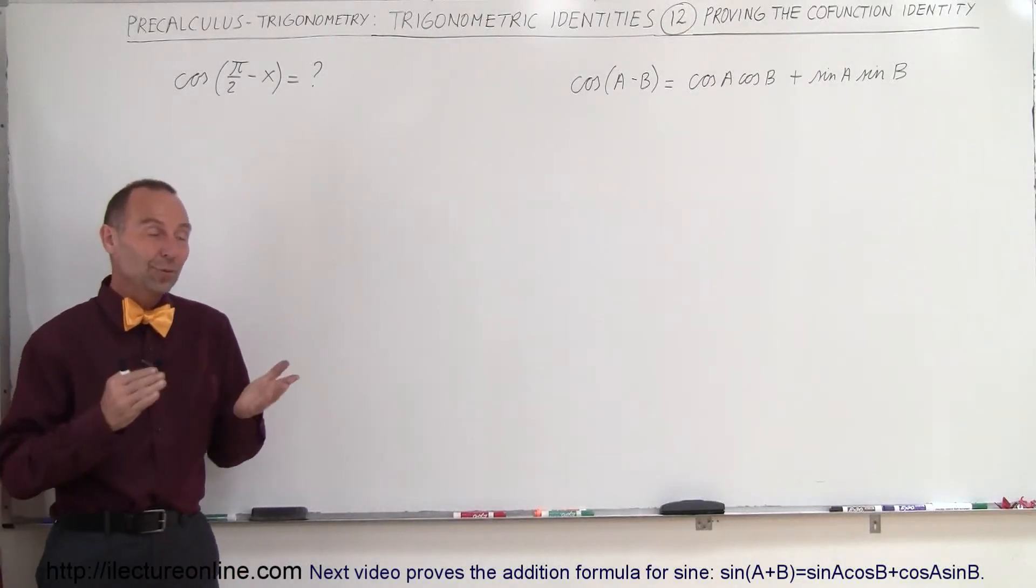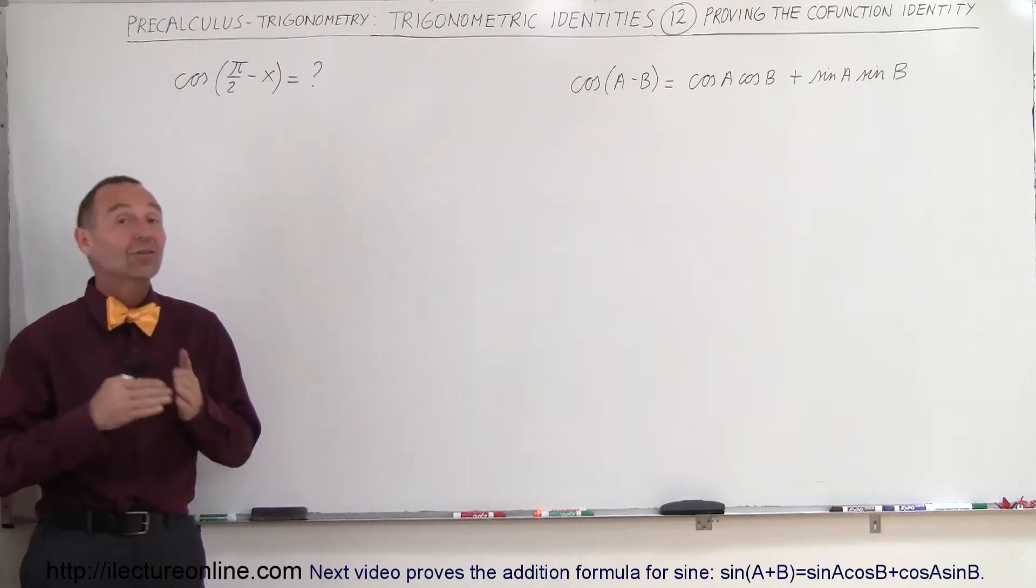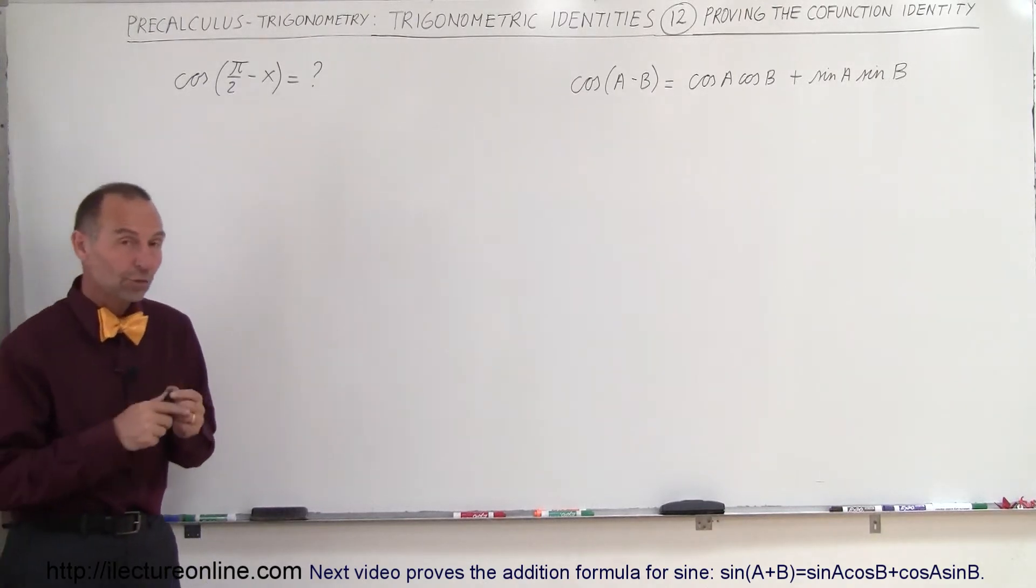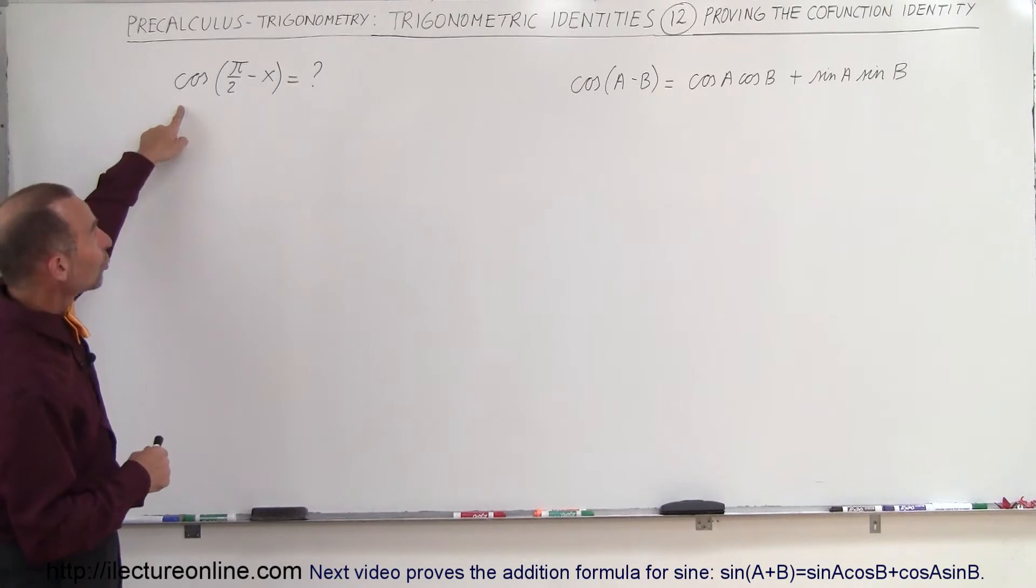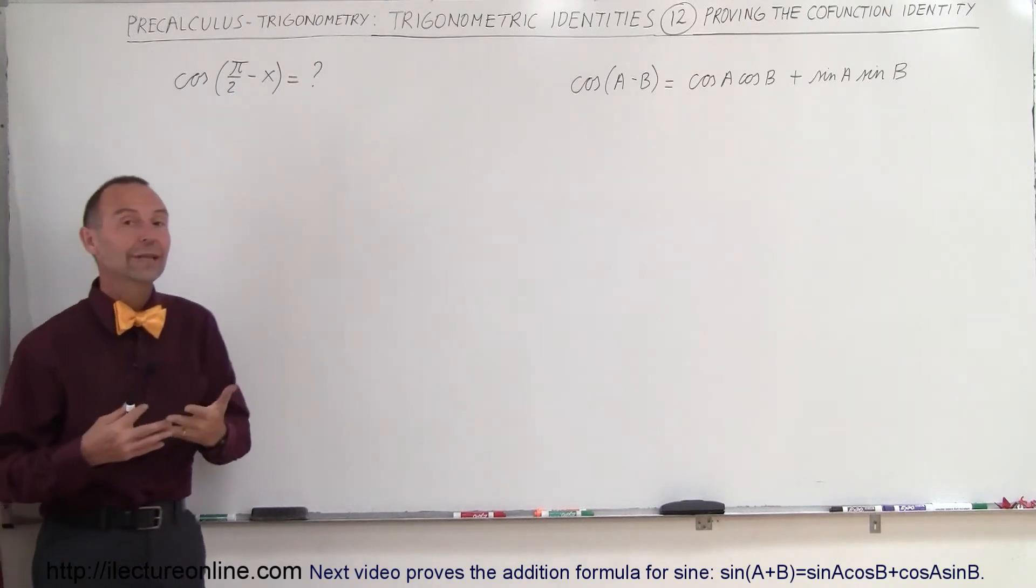Welcome to ElectronLine. Now that we've proven the addition formula and the subtraction formula for the cosine function, we can go ahead and try to prove what we call the co-function identity.